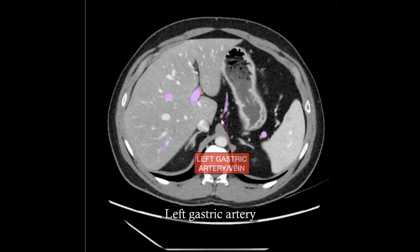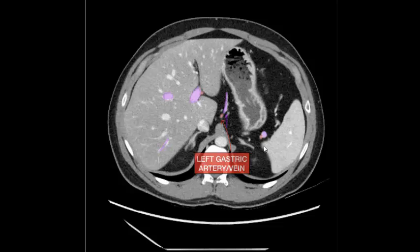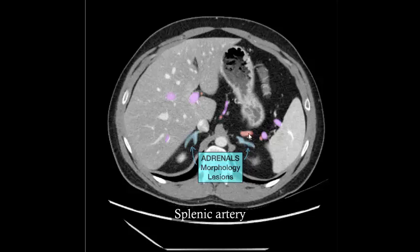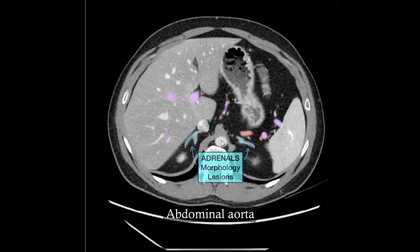Left gastric artery, left gastric vein, portal vein, spleen, splenic artery, splenic vein, stomach, spleen, right and left adrenal glands, splenic artery, splenic vein, spleen, inferior vena cava, abdominal aorta.